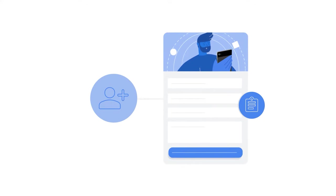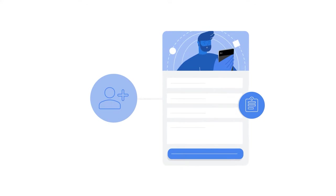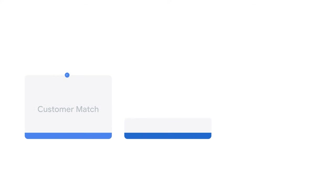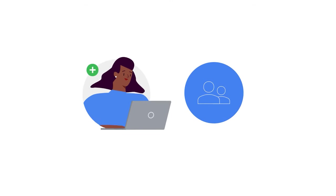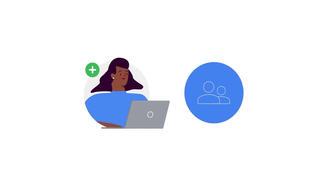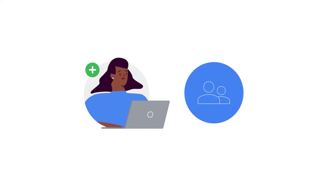Once you select the mode that is right for your business objectives, in both modes, new customers are determined using your data plus our signals. There are two ways you can set up this goal based on your campaign type in Google Ads, which we will cover in different chapters of this video.